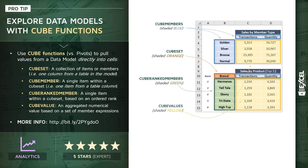Last but not least, we have our fourth primary type: the cube value, shown in yellow. These are the actual numerical values we're aggregating based on a set of member expressions, and those member expressions help filter down the values to retrieve the proper numbers.